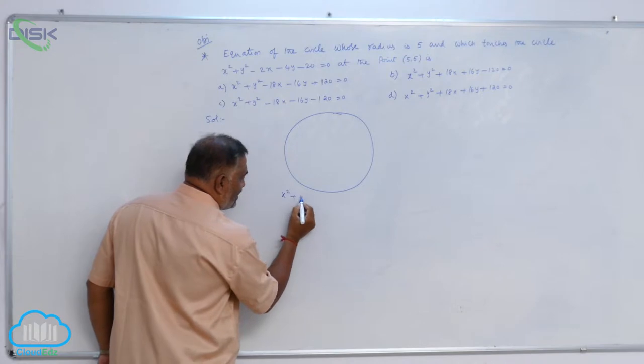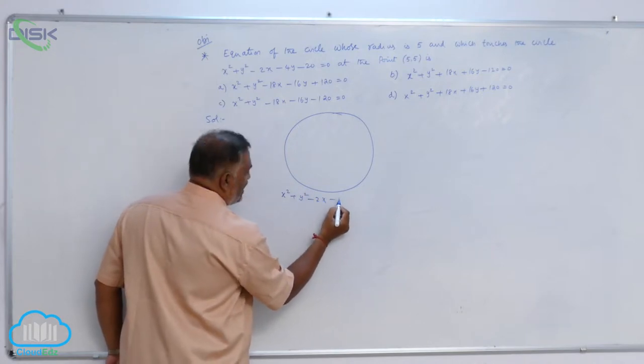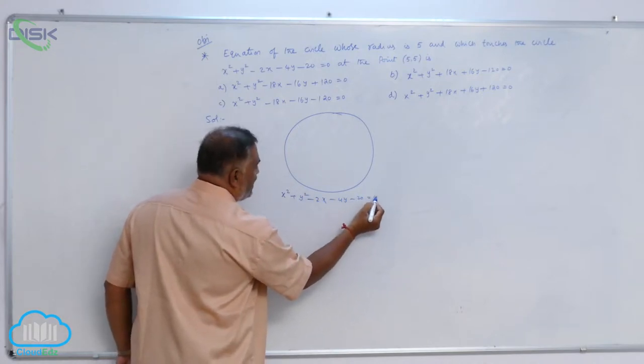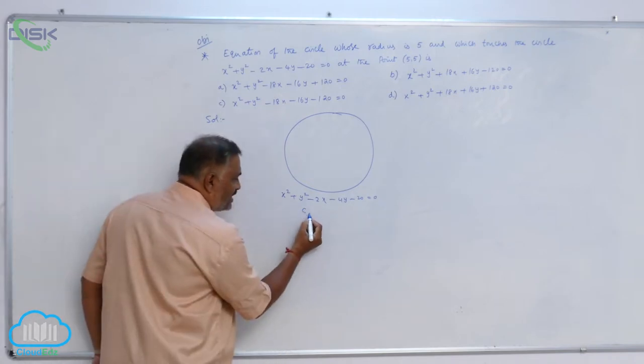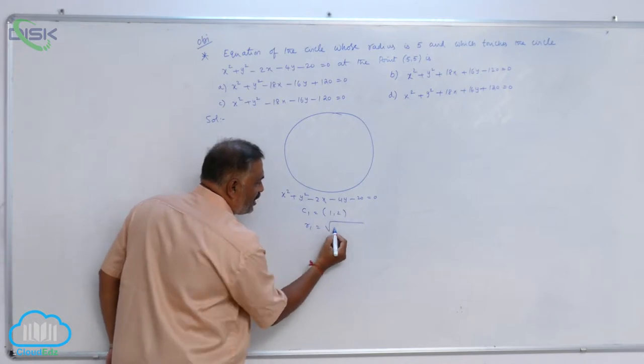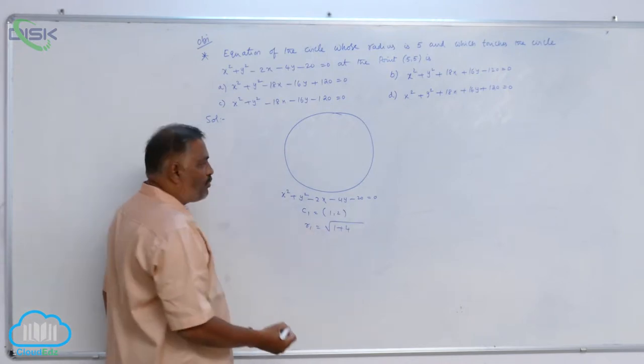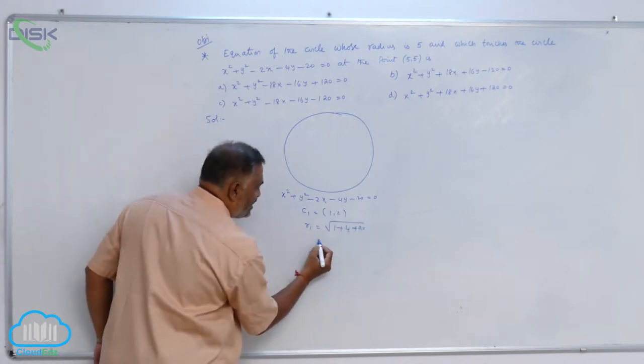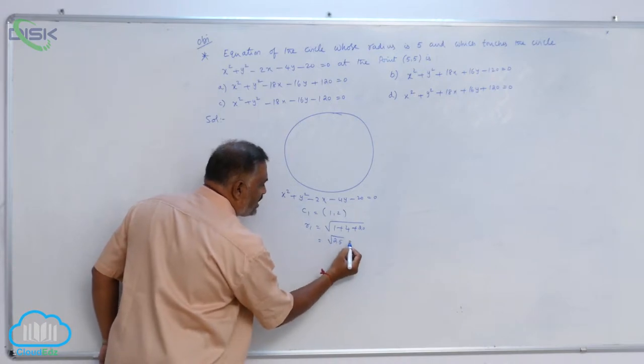The given circle is x² + y² - 2x - 4y - 20 = 0. Now, the center C₁ is (1, 2), and r₁ equals the square root of 1 + 4 + 20. So this is √25, which is also 5.